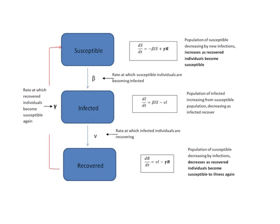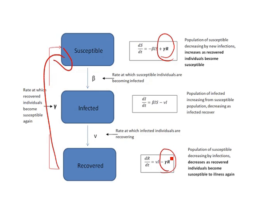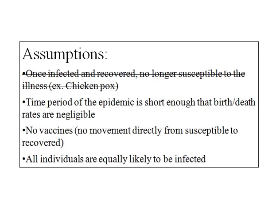The next model we will look at is very similar to the first, except that we will now be assuming that once a person becomes recovered, they do not stay recovered. They can re-enter the susceptible group and become infected once again. This change adds an additional term to the susceptible group, which then decreases the recovered group. With this change, we can eliminate one of our earlier assumptions, allowing us to more accurately model many diseases, such as the flu.